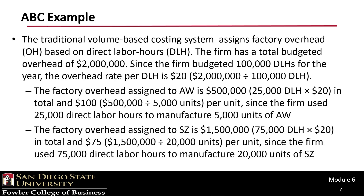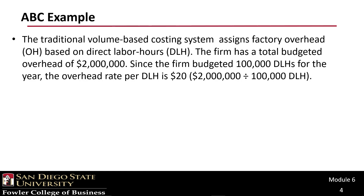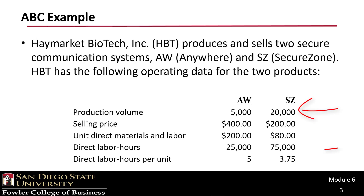We can do the same thing with SZ. The factory overhead assigned is $1.5 million — that's 75,000 direct labor hours times $20 — and $75 per unit, since the firm used 75,000 direct labor hours to manufacture 20,000 units of SZ. We can see those numbers: there's the 20,000 units and the 75,000 hours.